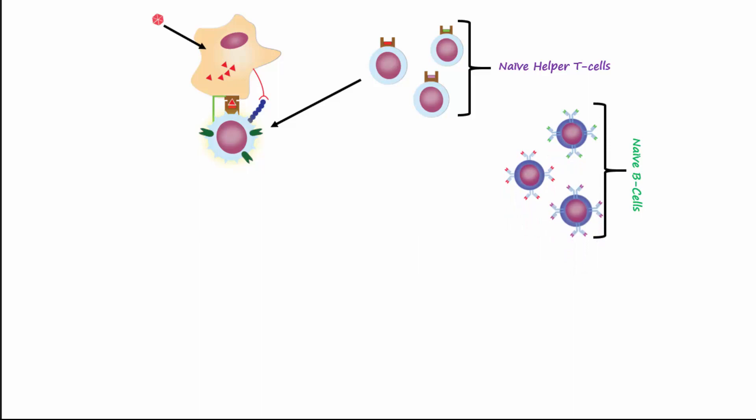There are naive B cells located in the lymph nodes that express IgD antibodies on their surface. These serve as the B cell receptor and come in contact with antigens. The B cell receptor recognizes a particular antigen. Notice the red antigen matches the red B cell receptor.